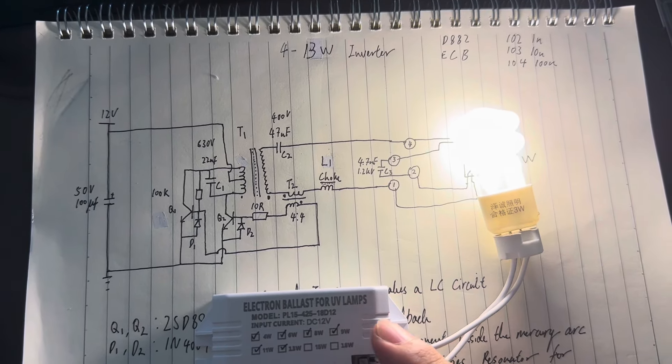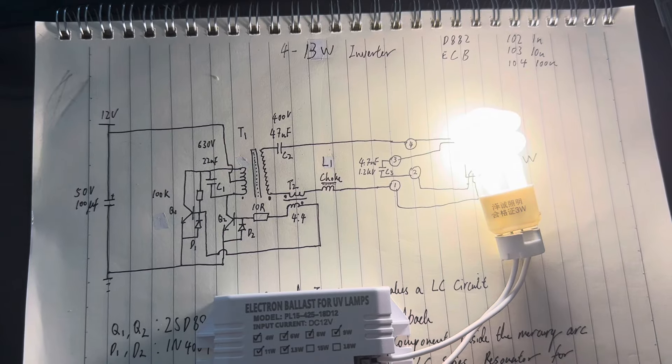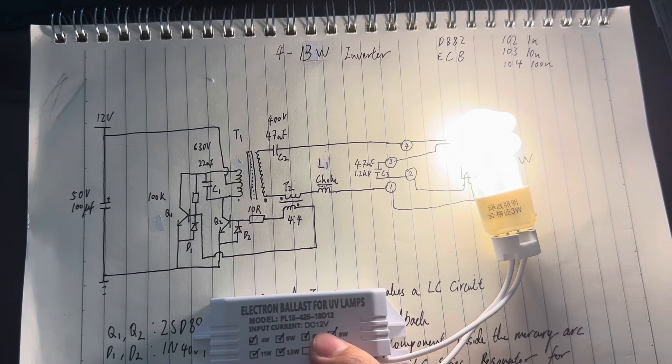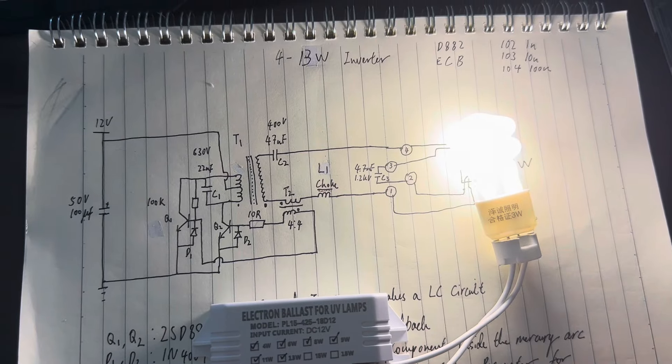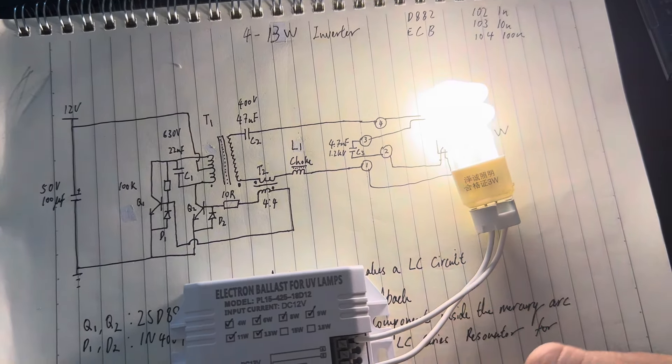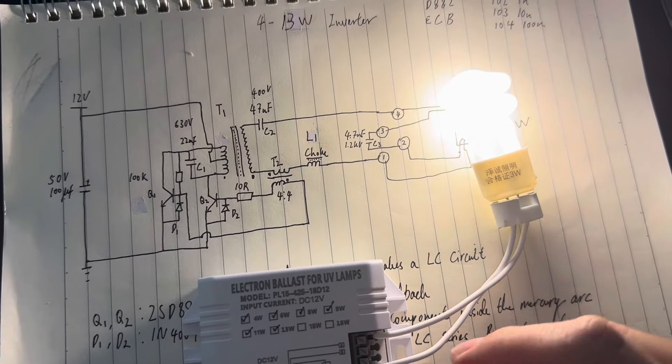Called an electronic ballast for UV lamps, which will be designed for DC 12V. The DC 12V is quite interesting, because this voltage is rarely used to drive any fluorescent light or lamp at all.